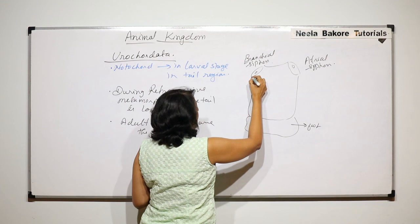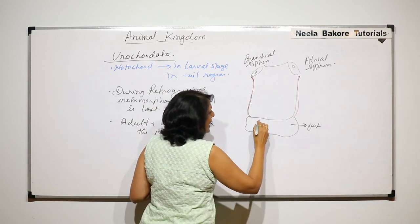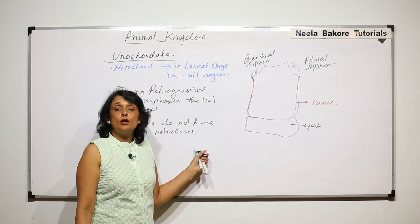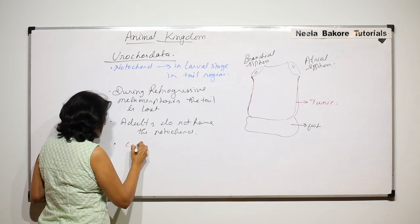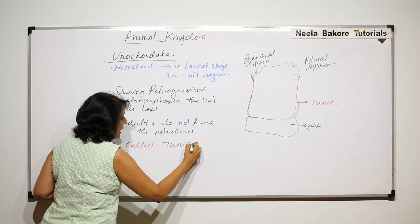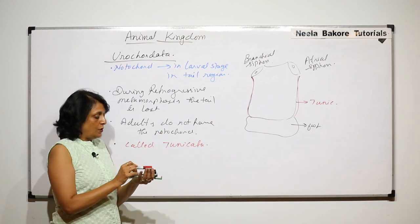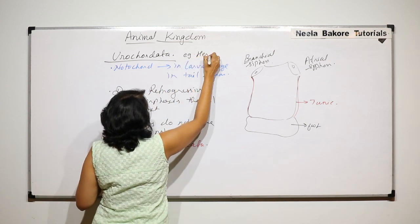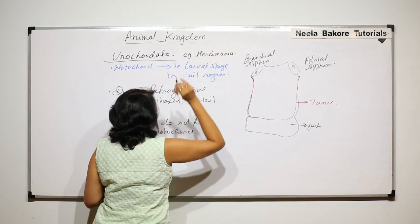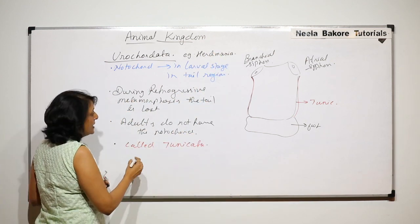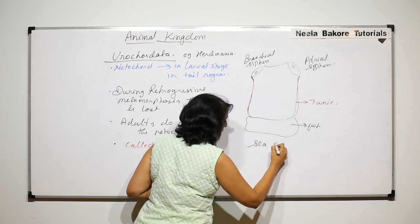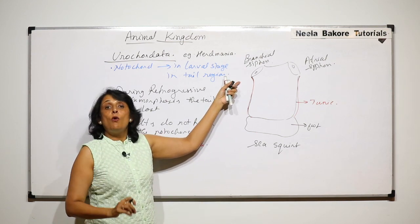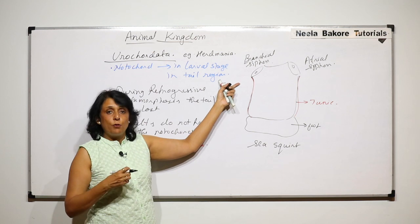The entire body is covered with a layer which is called the tunic. That is why they are also termed as Tunicata, as the body is covered with this tunic. The example we are talking about here is Herdmania, which is commonly also known as sea squirt.